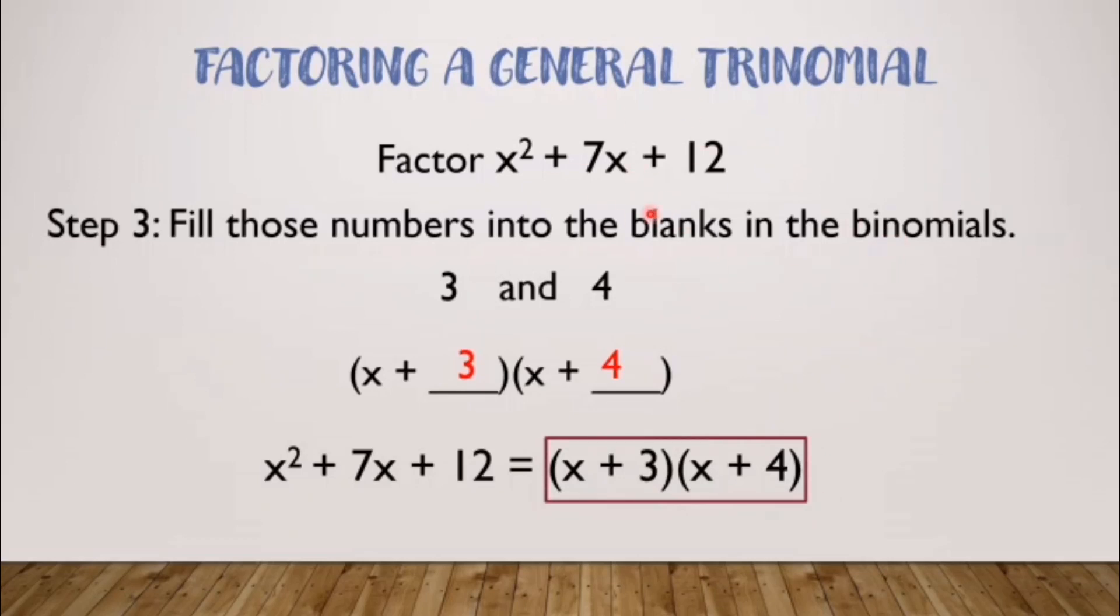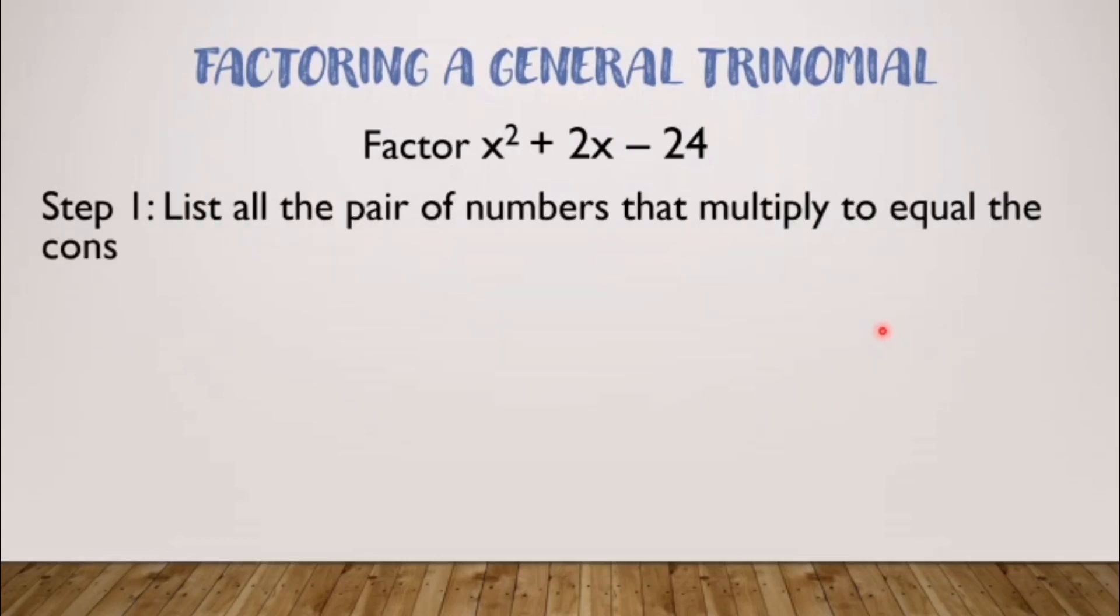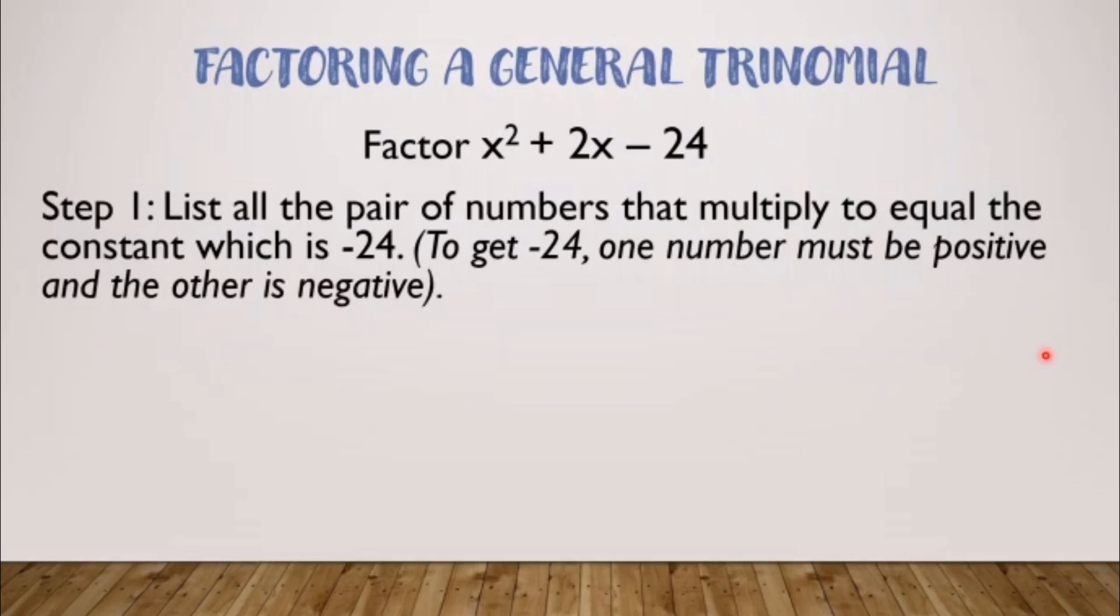Next example. As you noticed, the previous one was positive. So for another example, we'll have negative, to make it easier for you to understand and so you won't have queries regarding this video. Let us factor x squared plus 2x minus 24. So it's negative 24 in our given. First, we have to list all the pair of numbers that multiply to equal the constant which is negative 24. Take note, to get negative 24, one number must be positive and the other is negative. We know the rule of multiplication of numbers, integers, or polynomials: same or like signs give positive, unlike signs give negative. Since it is negative 24, we'll use unlike signs. That means when we list the two numbers, one should be positive, one should be negative. It can't be both negative and it can't be both positive.